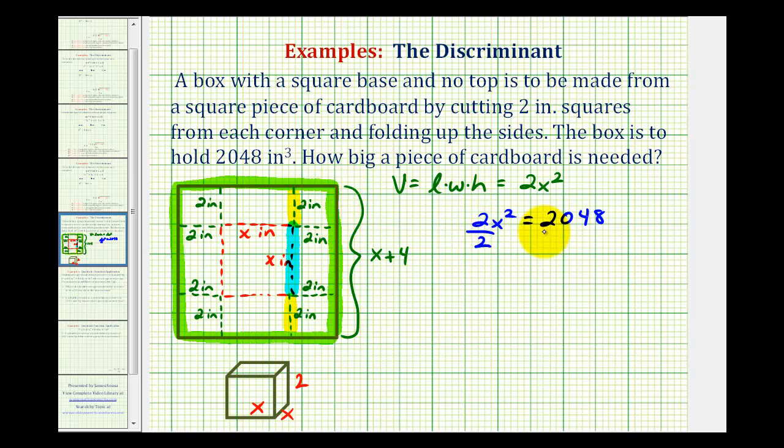So we'll divide both sides by 2. So if x squared equals, this would be 1,024.